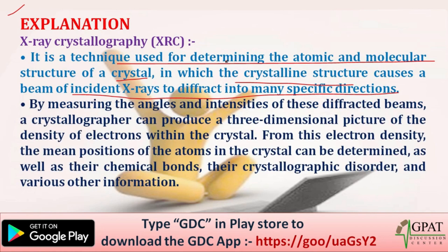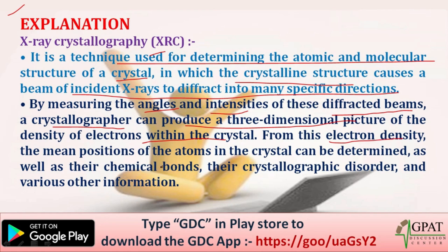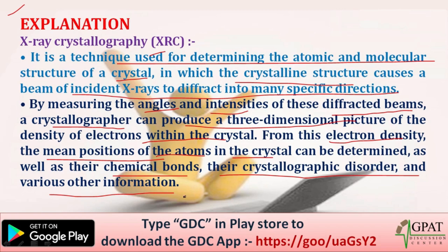By measuring the angles and intensities of the diffracted beams, a crystallographer can produce a 3D picture of the electron density within the crystal. From this electron density, the mean positions of the atoms, their chemical bonds, crystallographic disorder, and various other information can be determined.